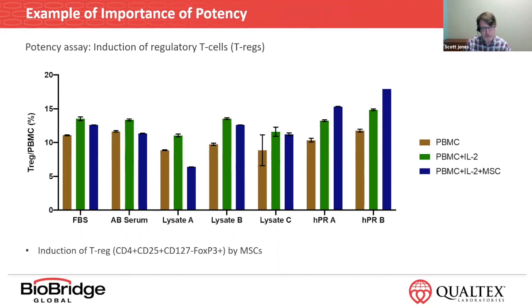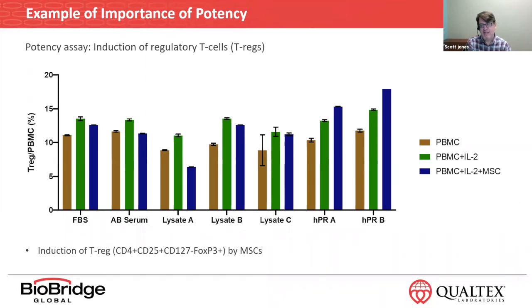On the y-axis you can see the T reg cells as a percentage of PBMCs, and on the x-axis you have the different media supplements. What you want to focus on are the green and the dark blue. The green is basically the PBMCs with the stimulant, and then the blue is if you add the MSCs. You can see that they're quite different — some of them down-regulate a little bit, and some of them, if you look to the far right at HPRA and B, you actually get a much larger increase in those T reg cells.